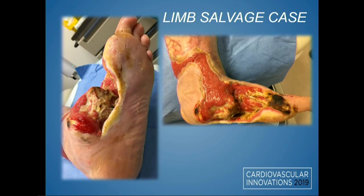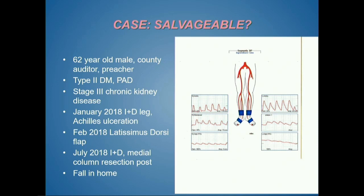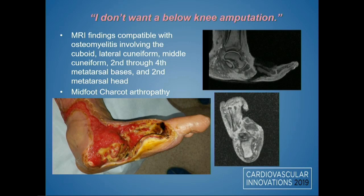This challenging case involves a patient here for a third opinion, having previously seen plastic surgery and vascular surgery. It started with an Achilles wound treated with debridement, then a latissimus dorsi muscle flap. During dressing changes he developed a dorsal foot ulcer; plastic surgery removed his medial column. He then tripped over his VAC and dislocated his midfoot. He arrived at the emergency room with nothing offered except a below-knee amputation. He's 62, running for county auditor, and pleading for an alternative. The main issues are osteomyelitis and open wound in a bad location, not primarily vascular.